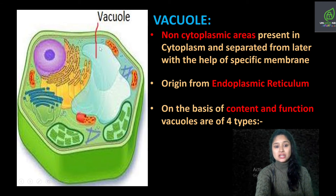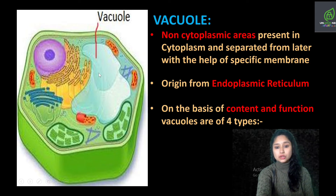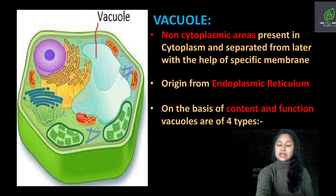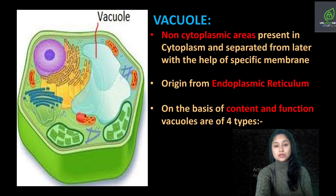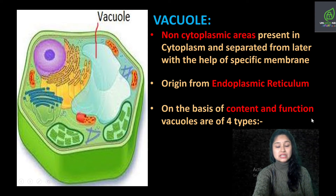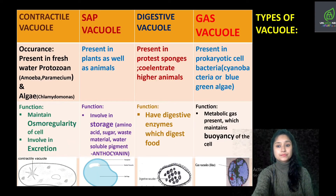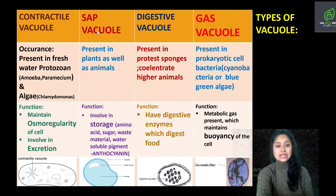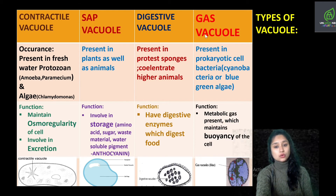Talking about their origin, vacuoles are originated from the endoplasmic reticulum. Now vacuoles have been classified into four different types on the basis of content and function they perform. These are: contractile vacuoles, sap vacuoles, digestive vacuoles, and gas vacuoles.